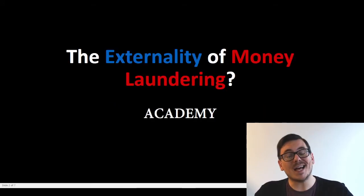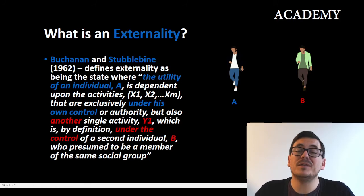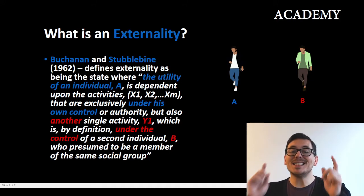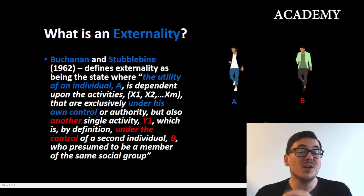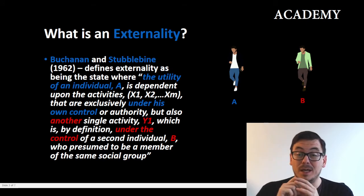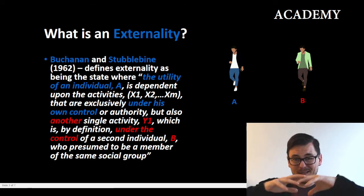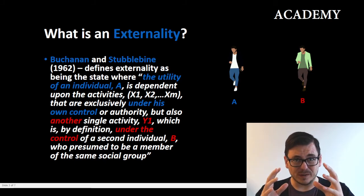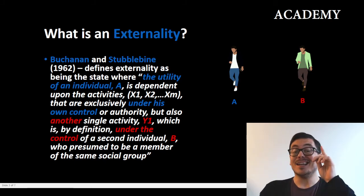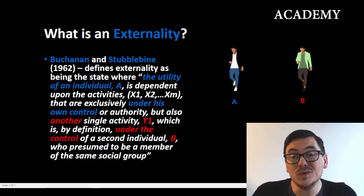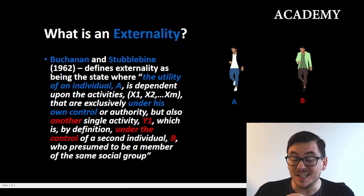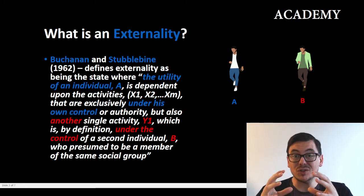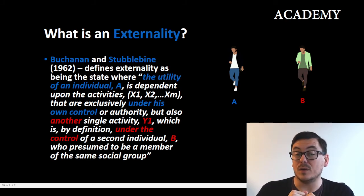But what is an externality? Buchanan defined externality in 1962 as the state where the utility of an individual — individual A — is depending on a range of activities that he has control over, except it is also depending on another activity that he doesn't control but is under the control of individual B.